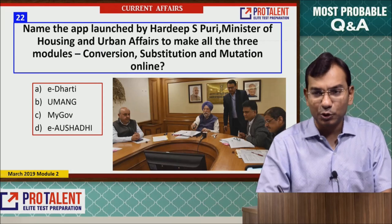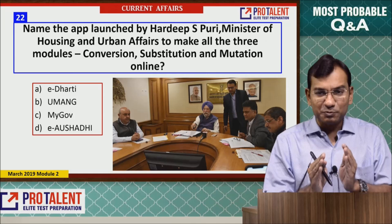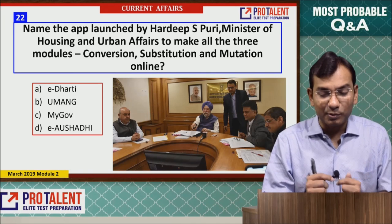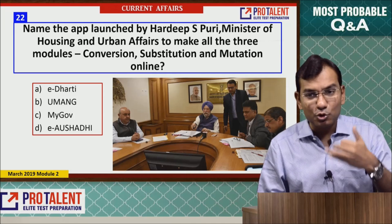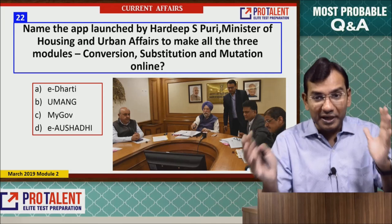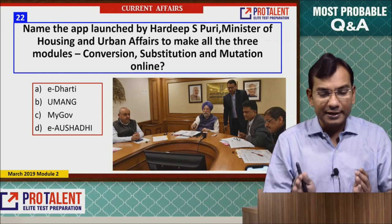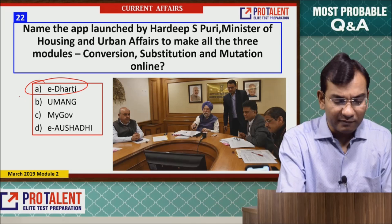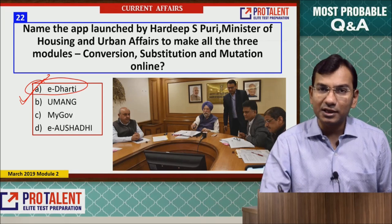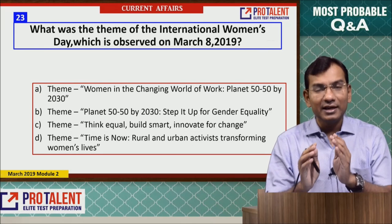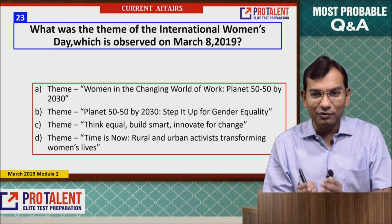Question 22: Name the app launched by Hardeep Puri, Minister of Housing and Urban Affairs, to make all three modules of land — conversion, substitution, and mutation — available online. The app is called E-Dharti.